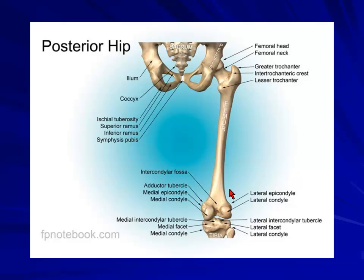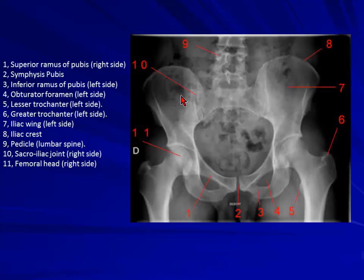We'll talk about the knee joint later. Regarding the trochanter, intertrochanteric line, and lesser trochanter — you can get avulsion injuries here because these are muscle attachment sites. So you can have avulsion injuries at the greater trochanter, lesser trochanter, and here as well. If you see uptake at these sites, it corresponds with those structures, so you can say it could reflect avulsion injuries.